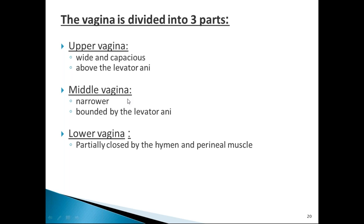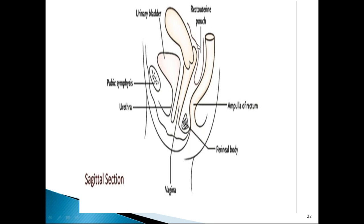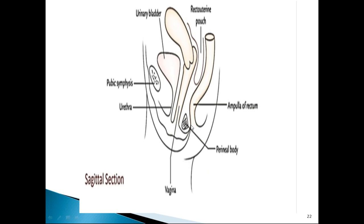The vagina is divided into three parts by the levator ani muscle: upper vagina above the levator, middle vagina bounded by the levator, and lower vagina below the levator ani. The anterior wall upper one-third is related to the bladder; lower two-thirds to the urethra. The posterior wall upper one-third relates to the pouch of Douglas, middle one-third to the ampulla of rectum, and lower one-third to the perineal body.